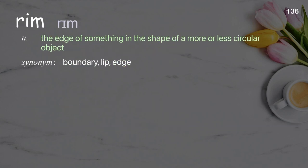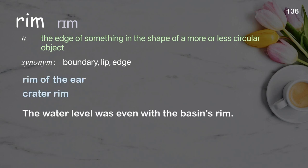Rim. The edge of something in the shape of a more or less circular object. Examples: rim of the year, crater rim. The water level was even with the basin's rim.